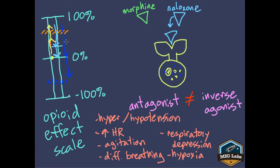That's the trouble with naloxone as an inverse agonist — we can overshoot, causing withdrawal symptoms. Some may just be agitation, nausea, vomiting, or diarrhea, which are manageable and not life-threatening. But you can also cause hypotension, ventricular dysrhythmias, respiratory depression, and hypoxia, which absolutely can be life-threatening and can put this patient in just as bad a shape as before — or worse. That's why understanding naloxone dosing is so important.